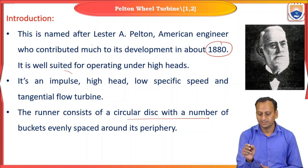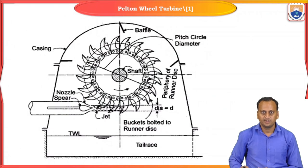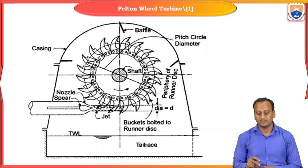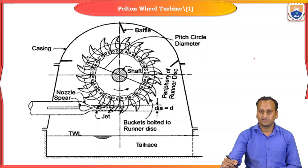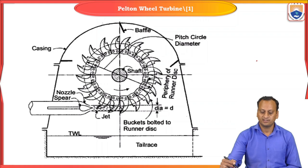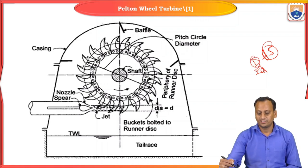The runner consists of a circular disk with a number of buckets evenly spaced over its periphery. In this diagram we can see how the buckets are placed and the condition for the minimum number of buckets. There is an empirical relation to determine the number of buckets to be accommodated on the periphery of a runner of the Pelton wheel turbine: N = D/(2d) + 15.